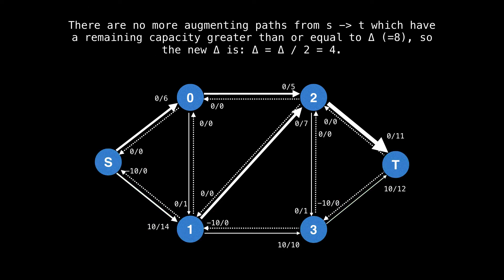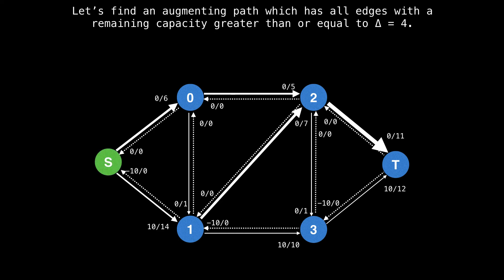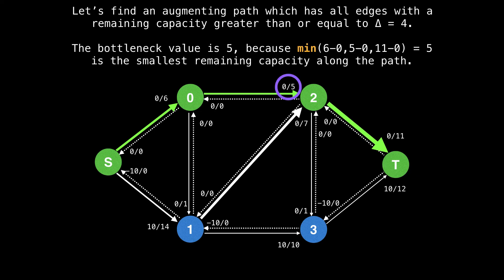You can analyze the flow graph, but there are no more augmenting paths from s to t, which have a remaining capacity greater than or equal to eight. So the new delta is halved in two, and is now equal to four. One path we can take with all remaining capacities of four or more is the following. Start the source, go up sideways and sideways again, then do the usual find the bottleneck and augment the flow.